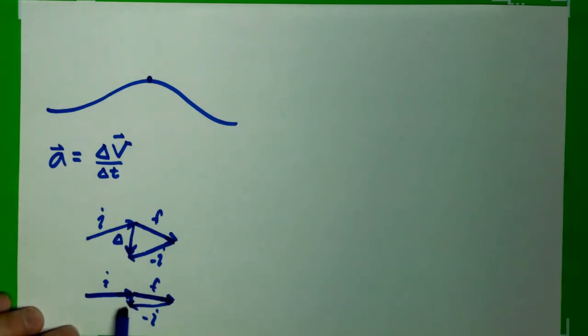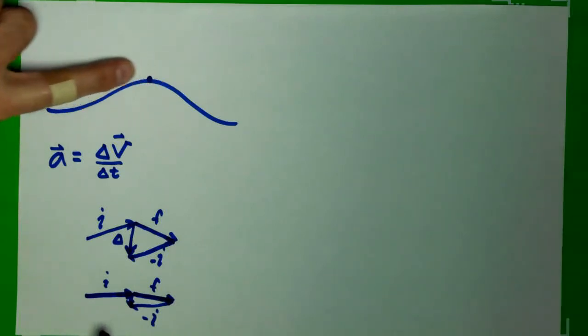But the important thing here is, as we zoom in in time, these two vectors are becoming more and more horizontal. They pretty much are getting tangent to that top curve, and our acceleration is straight down.